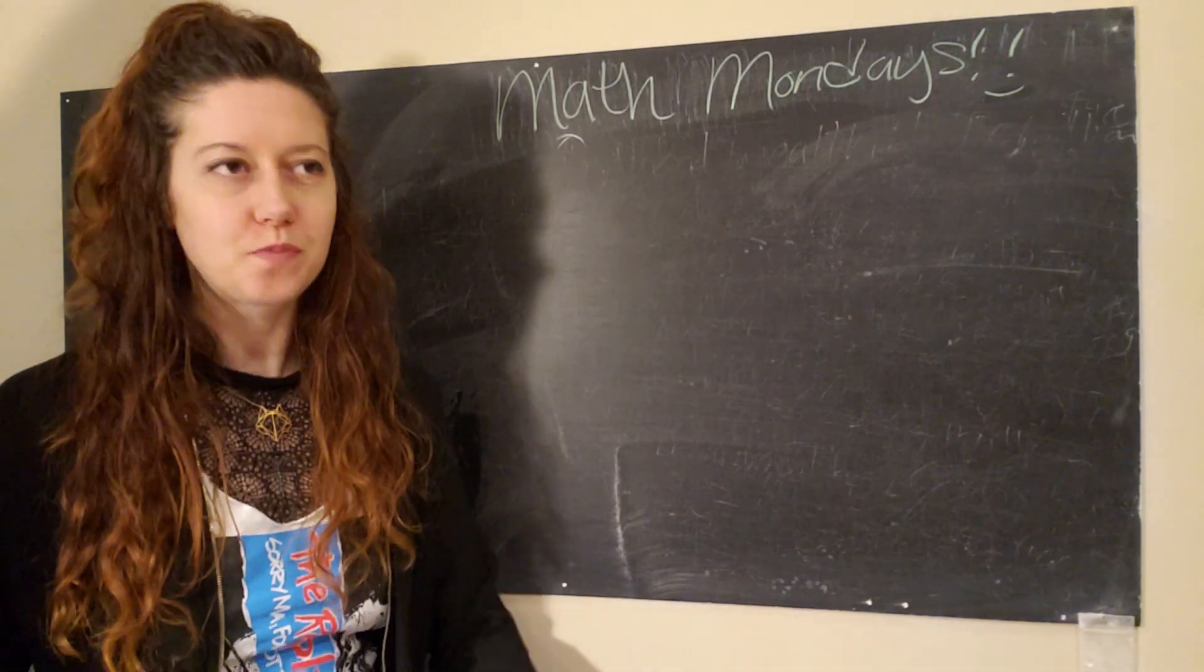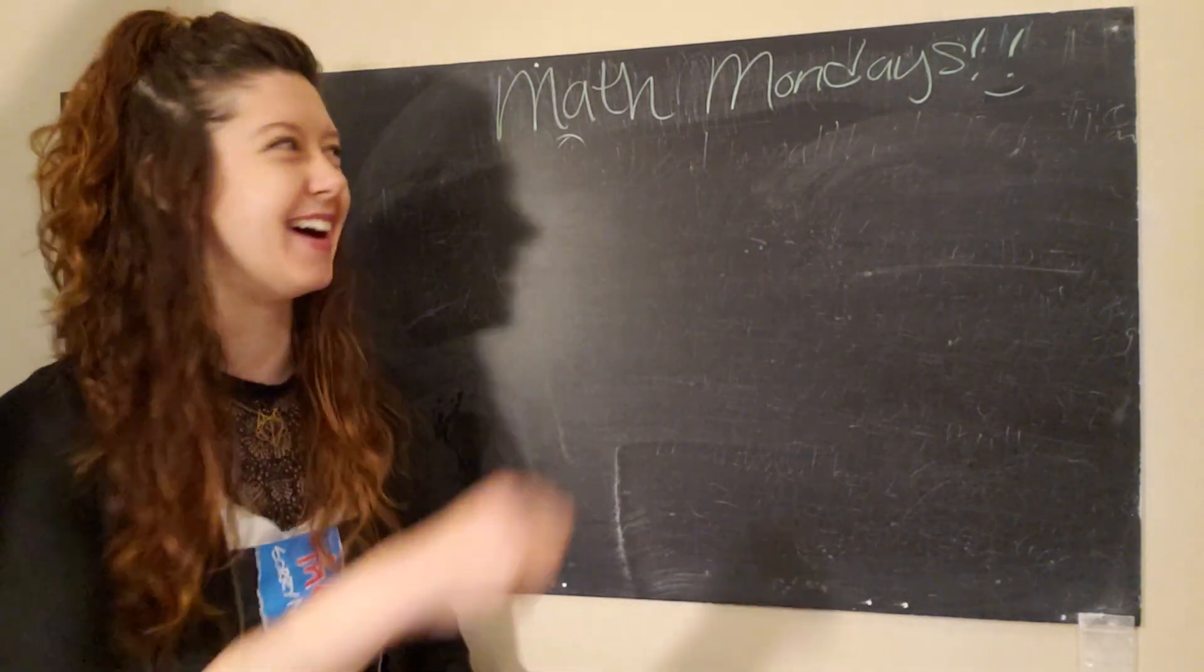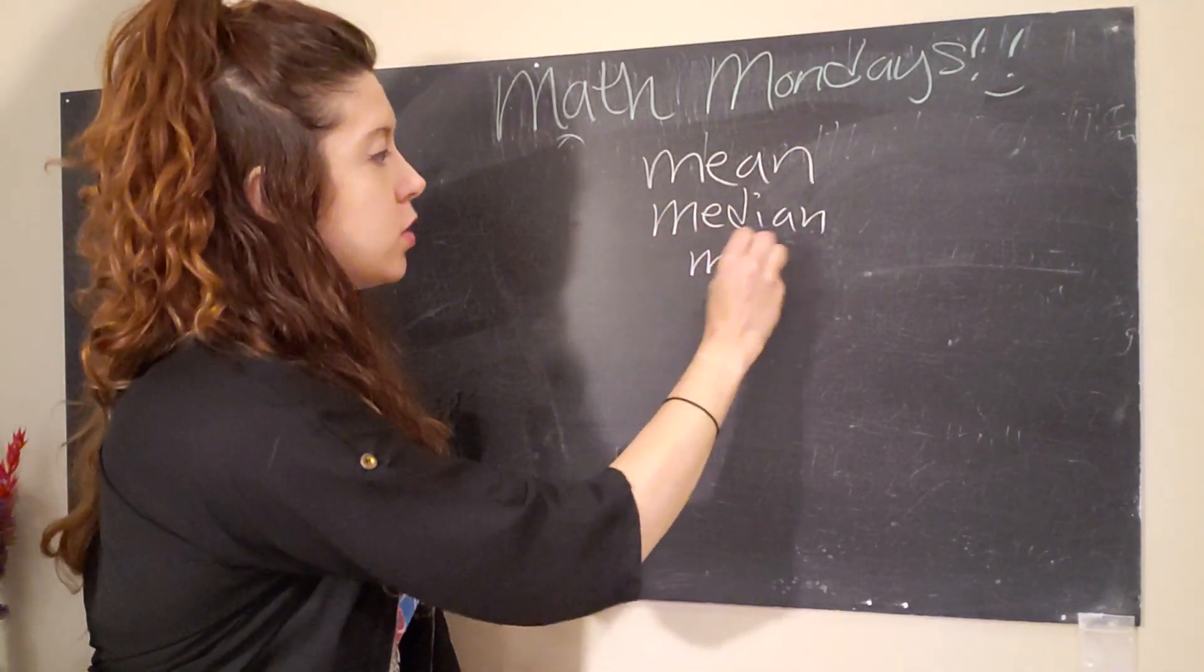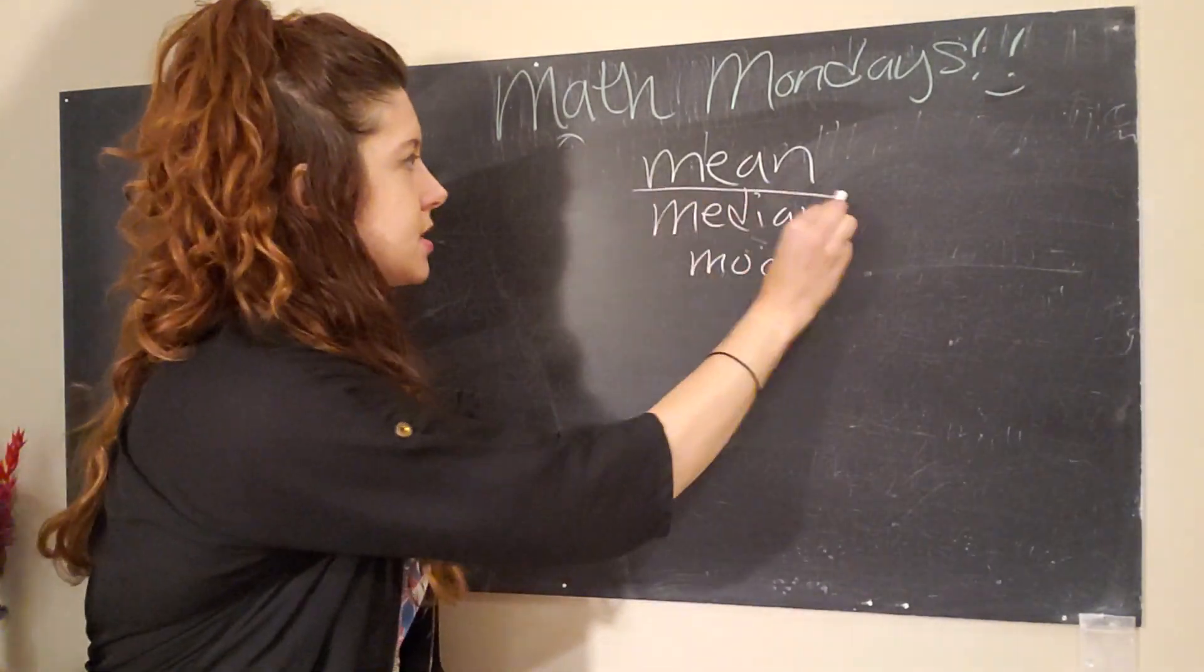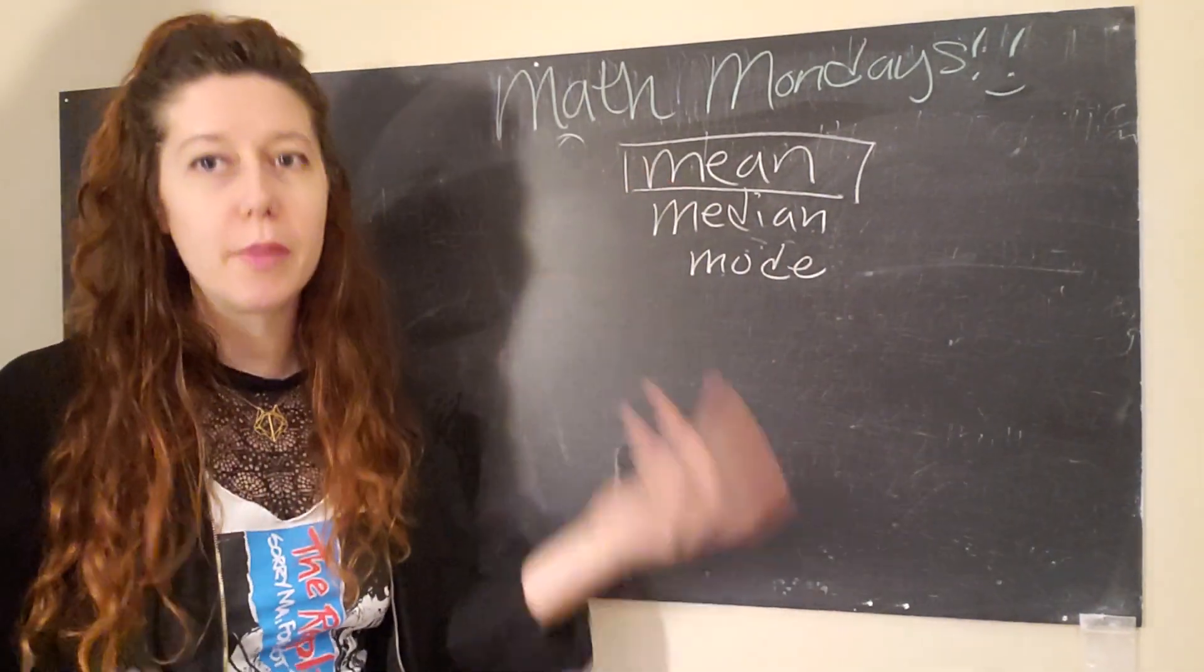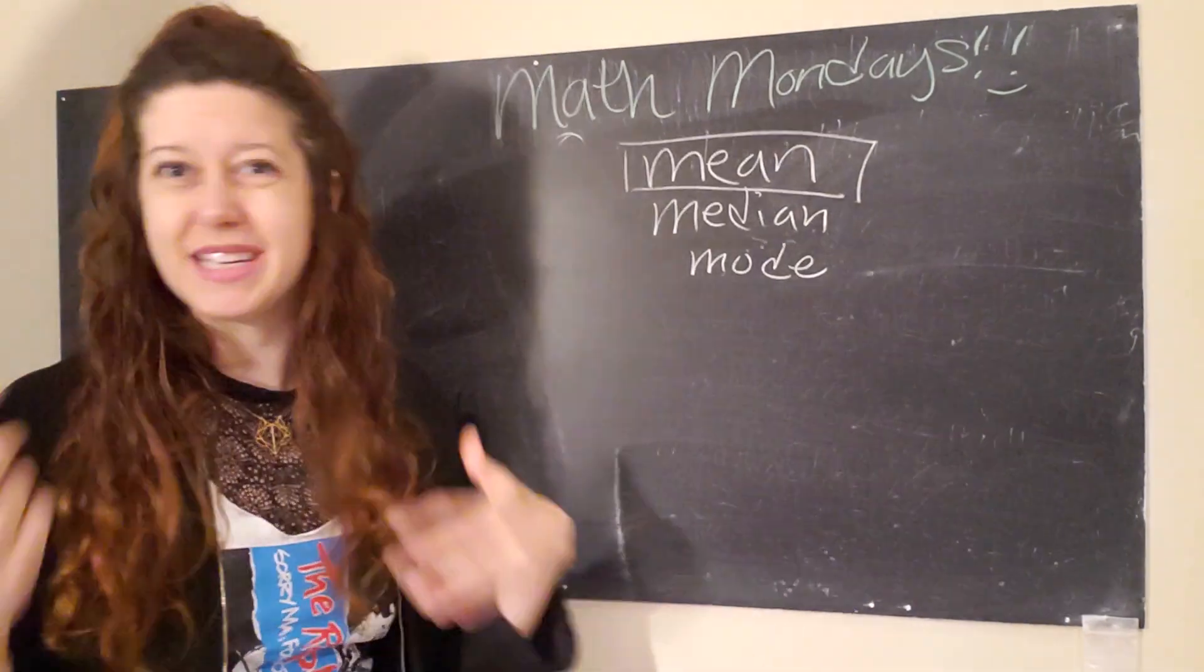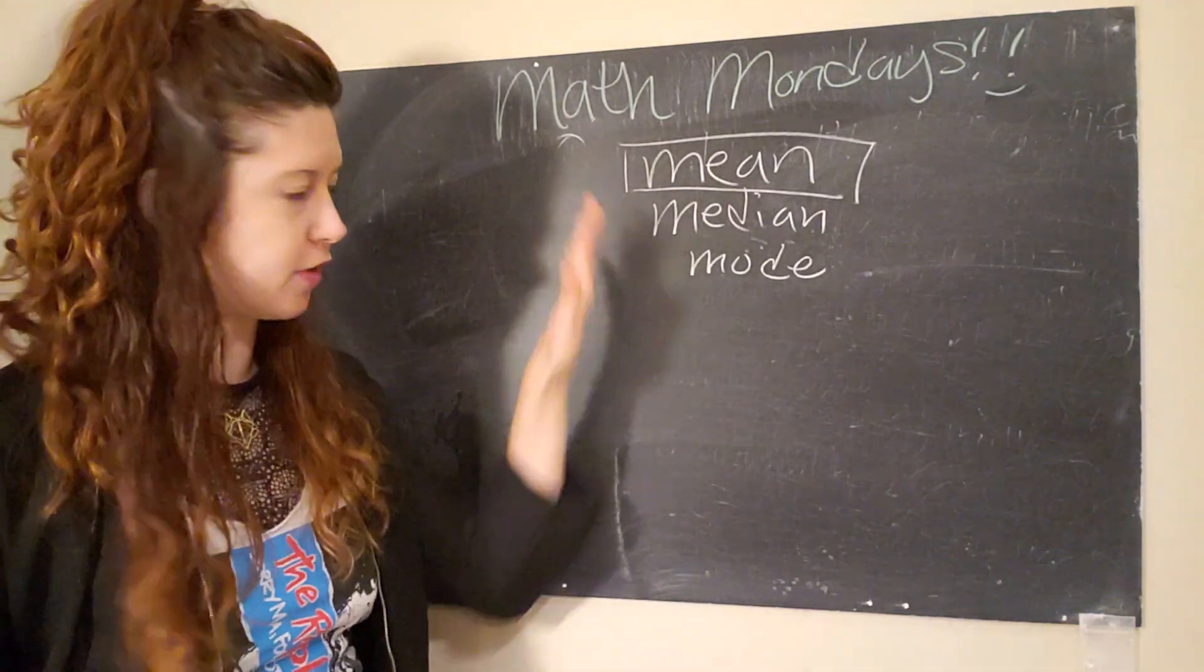Alright, so when I say average, what I really mean is the mean. So, you might have heard the terms mean, median, and mode when talking about averages. Mean is the most common. That's the most commonly used mathematical term when we're talking about average. But each of these concepts mean different things. So, mean is typically the average, and I'll define that in one second.